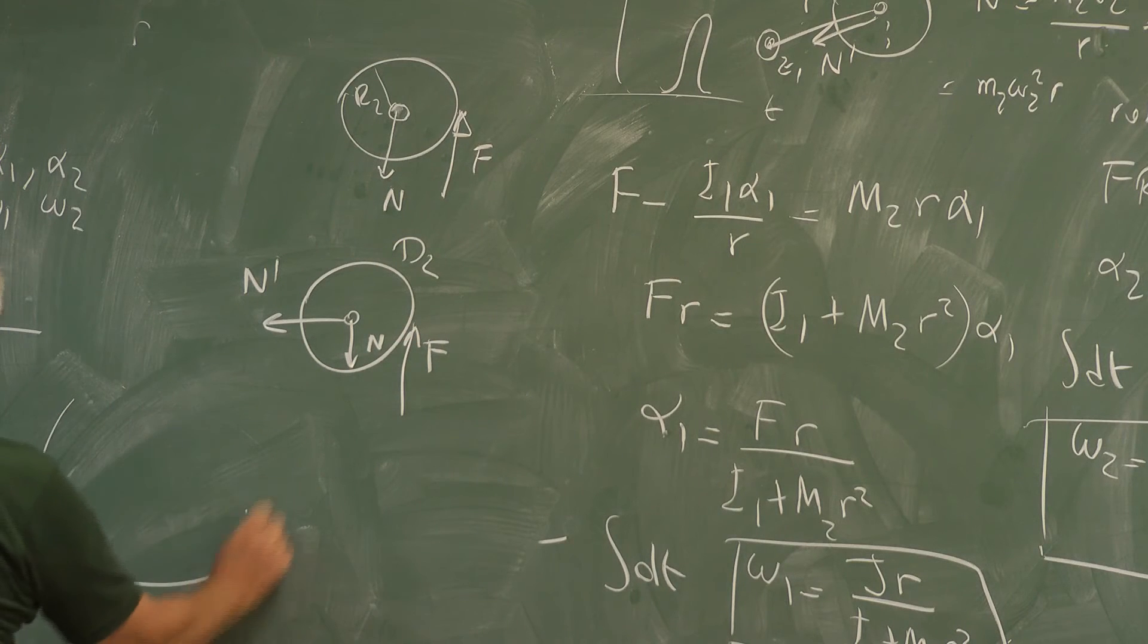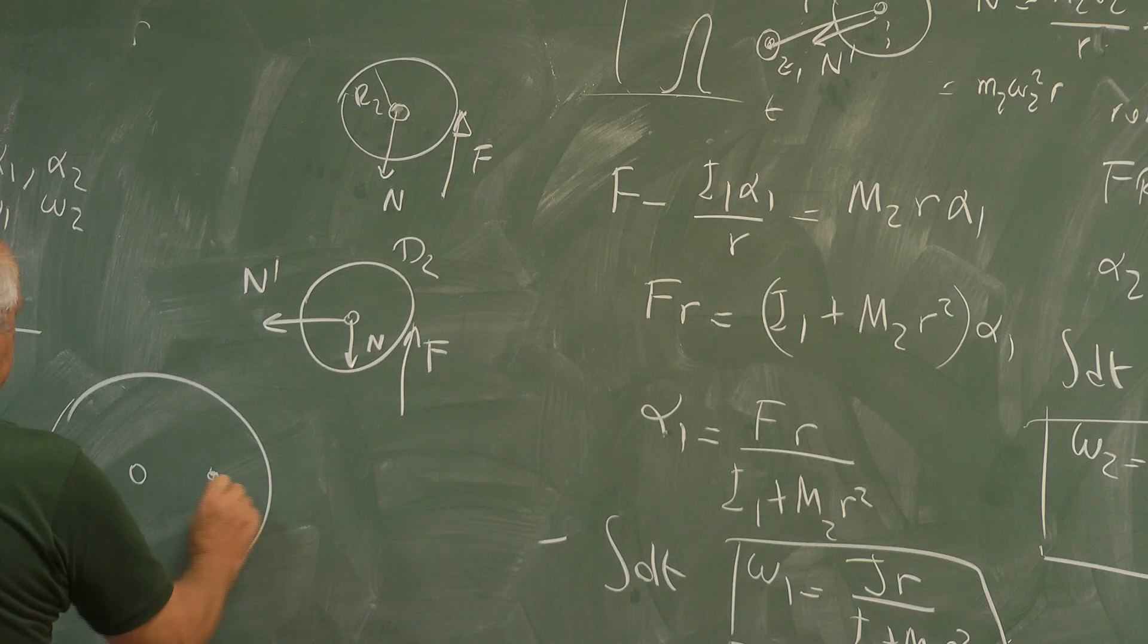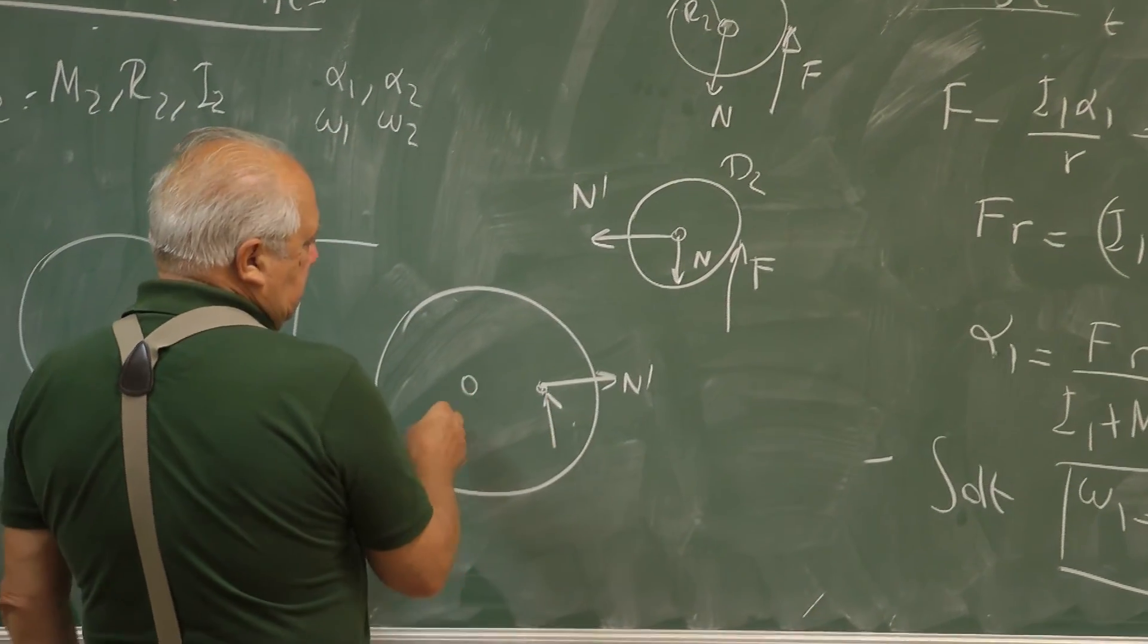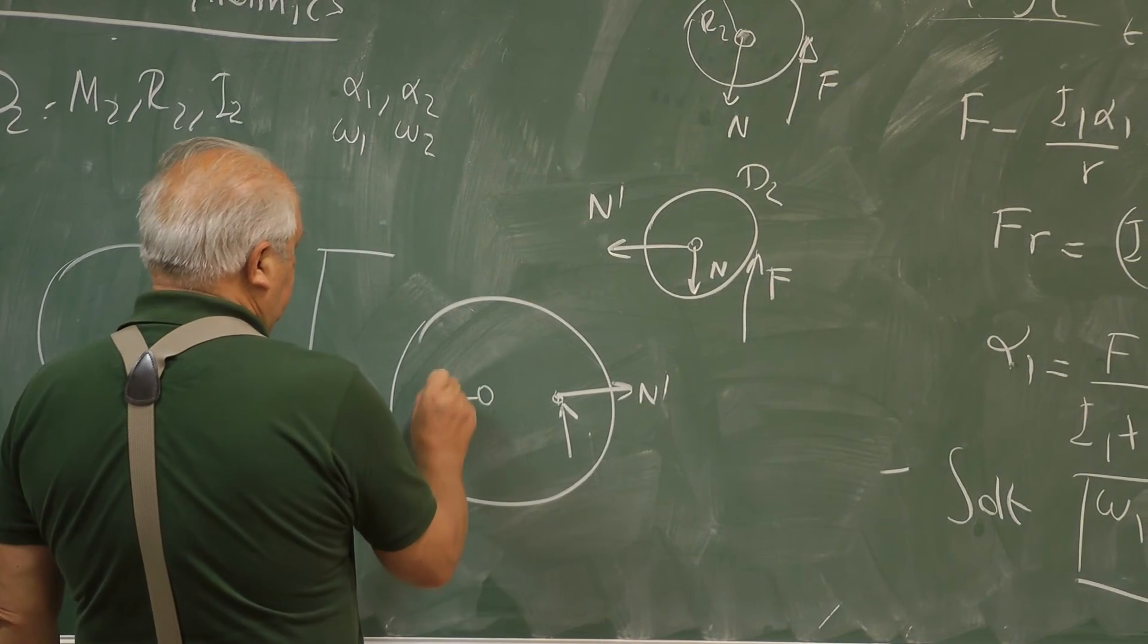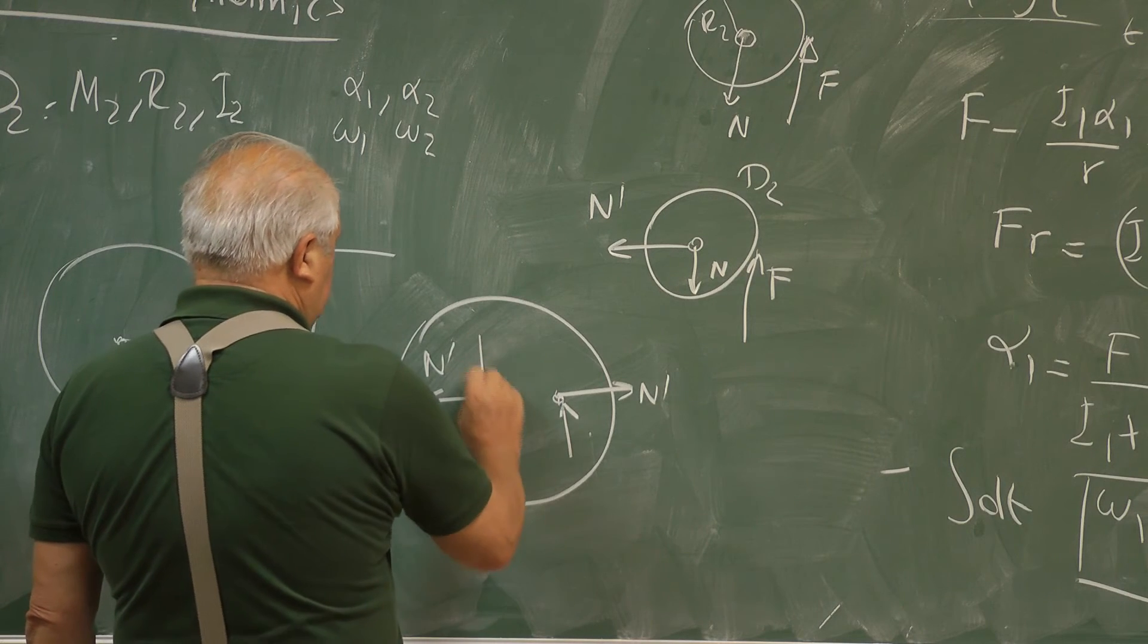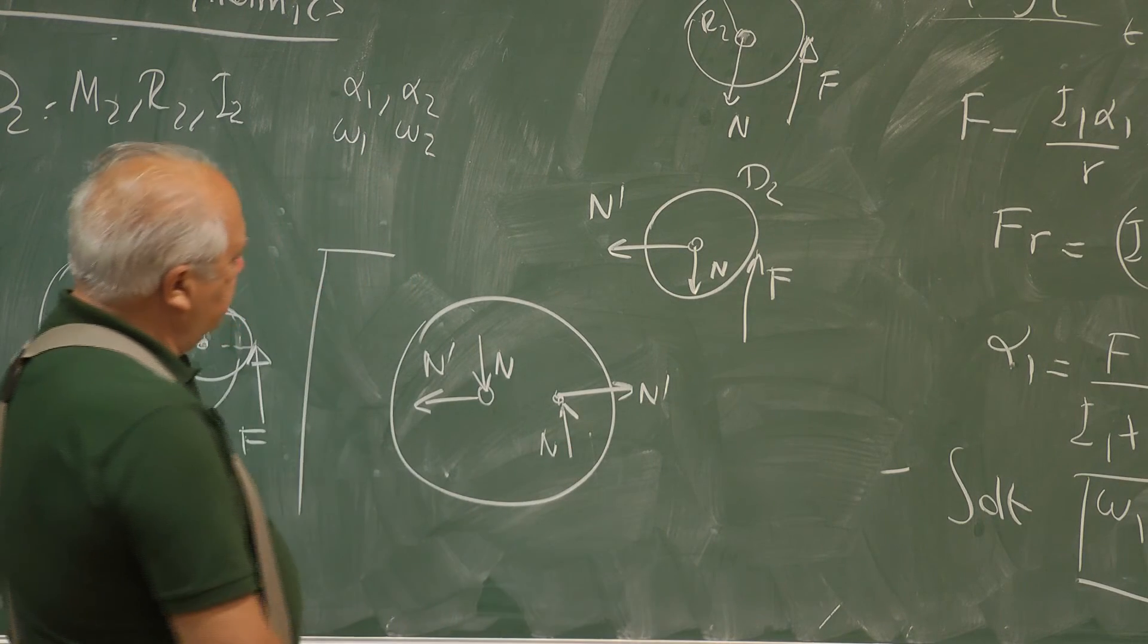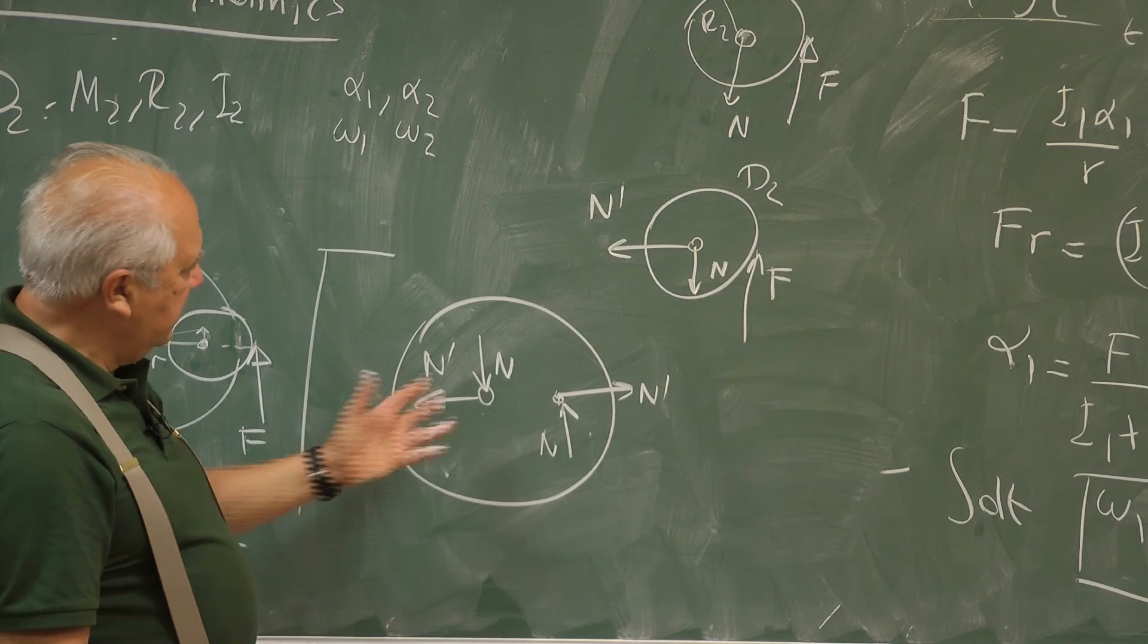So if there is N prime there, on the big disk, so I will now write all the forces. Since we find ω1 and ω2, I erased the equations. Let's just look at the picture. On D2, forces are F, N, and N prime. N prime is that centripetal force to keep it. And now at the big disk, here is N. And therefore there is an N prime here. But this disk is not going anywhere. And of course there is an N here. So the net force on the disk to move it in the horizontal plane is zero.